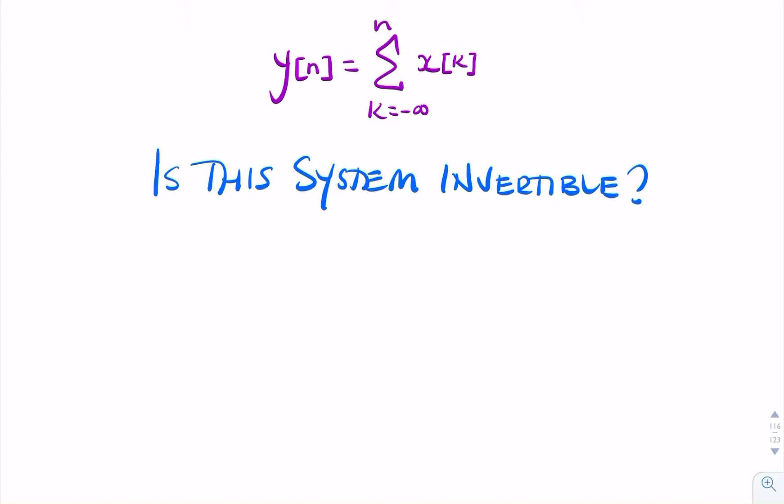Here, we're given something called an accumulator, where you add up all the values of x from the distant past, from k equals minus infinity, until the present, until time n.